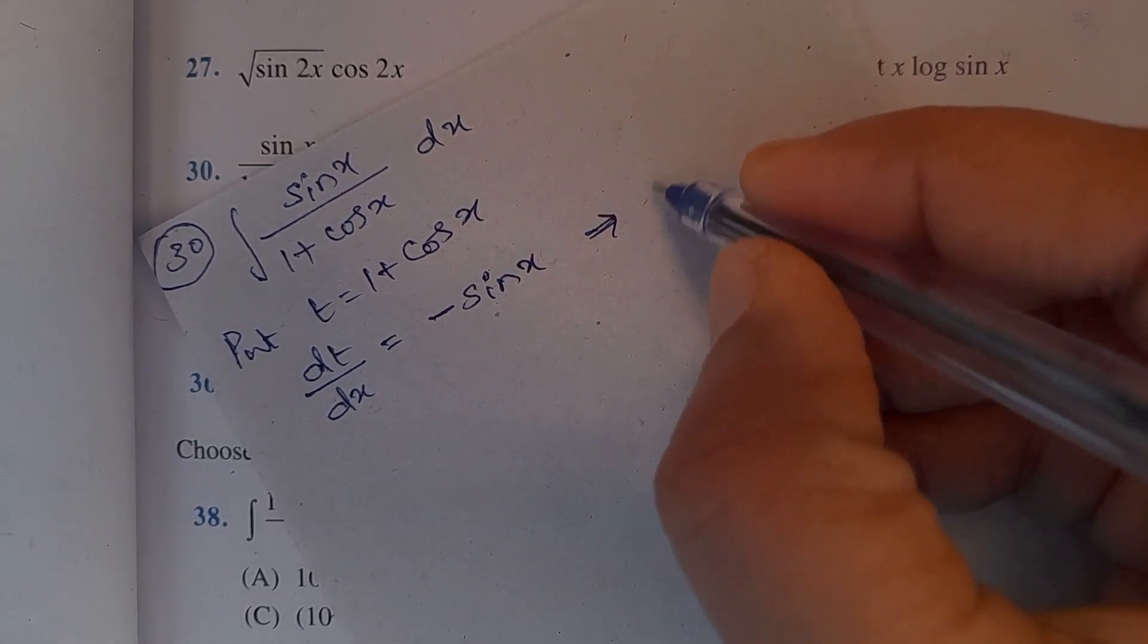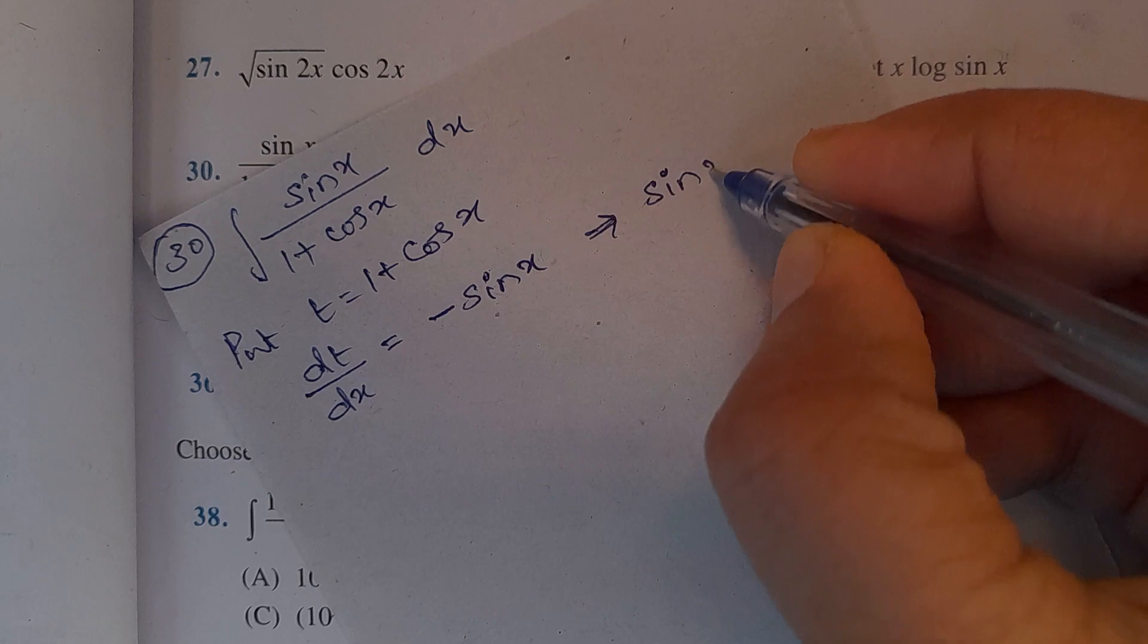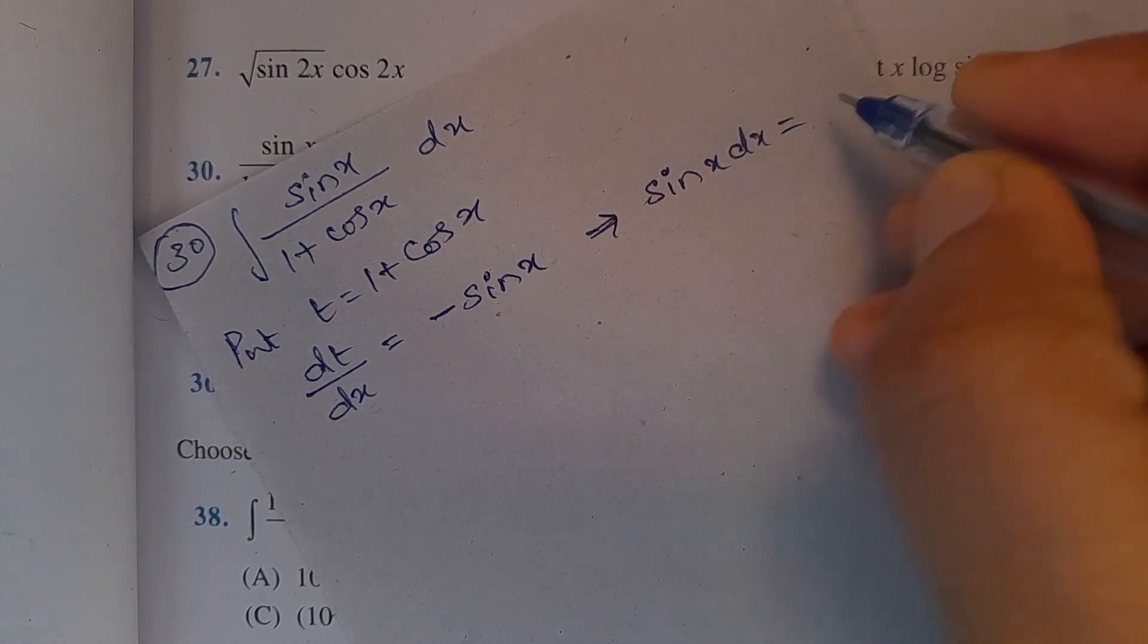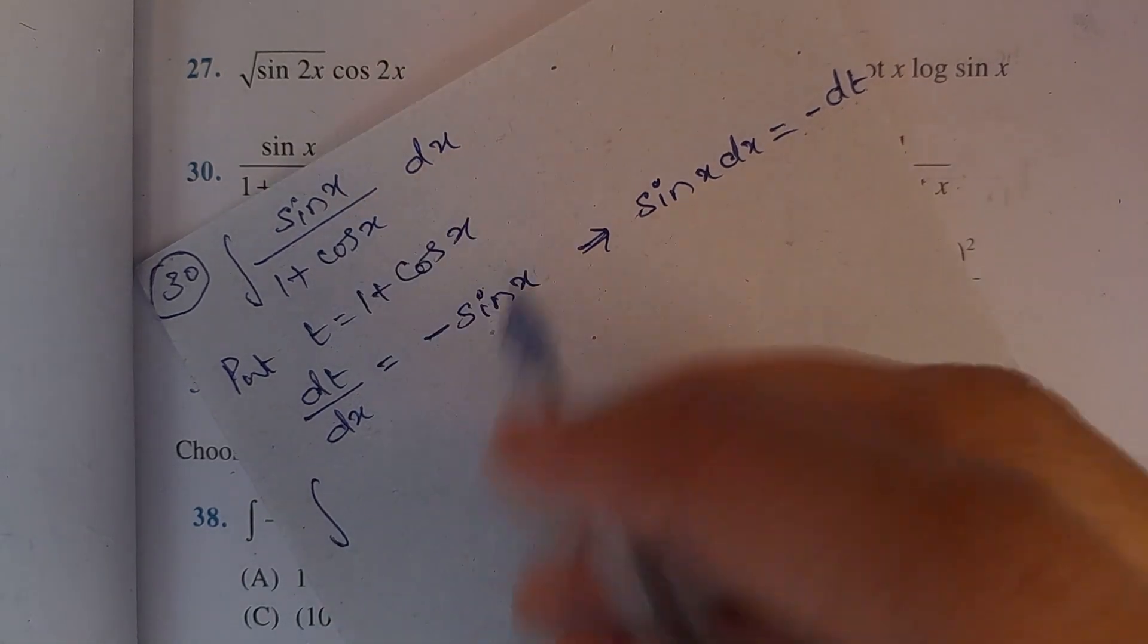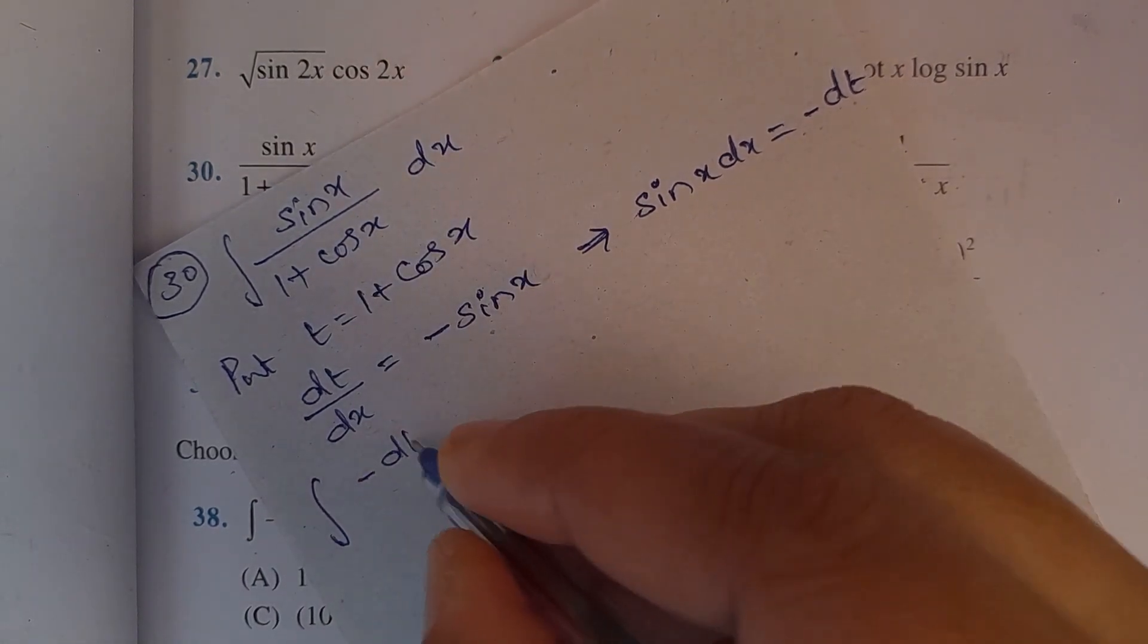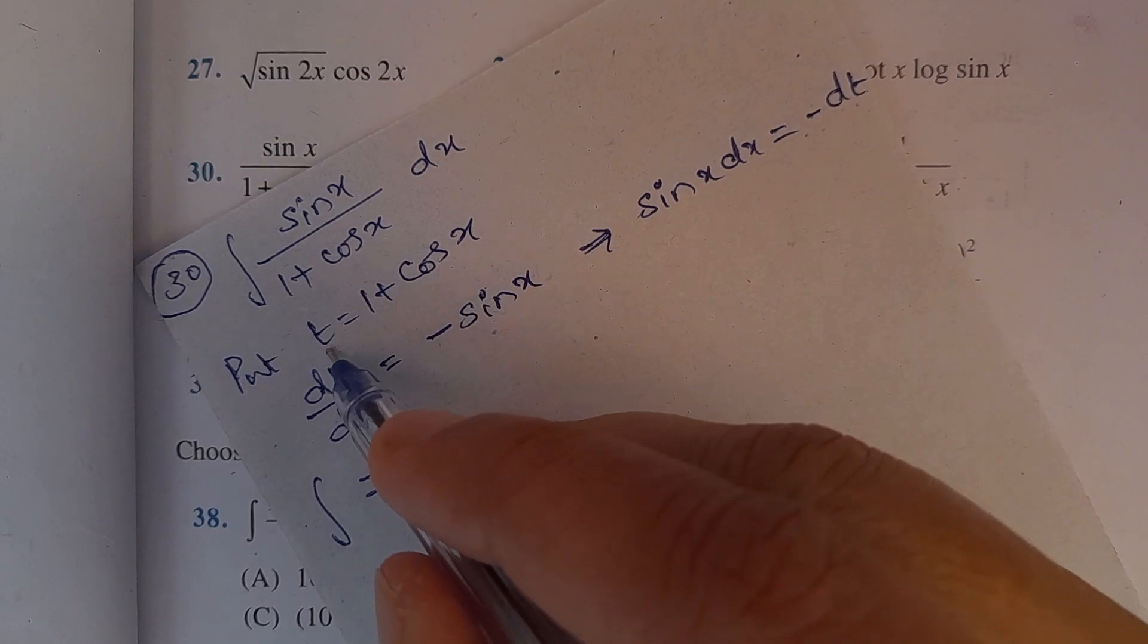Next, sin x dx equal to minus dt. So, integral of sin x dx is minus dt divided by 1 plus cos x is t.